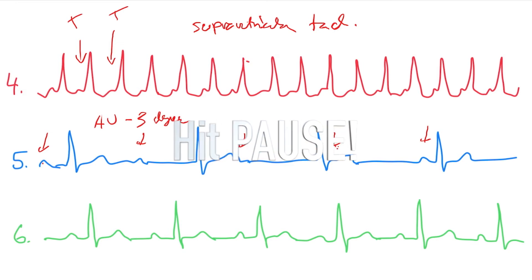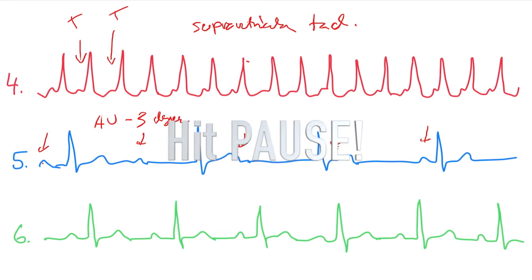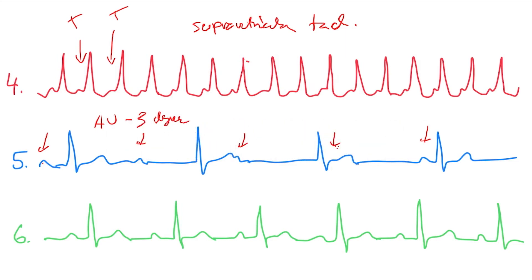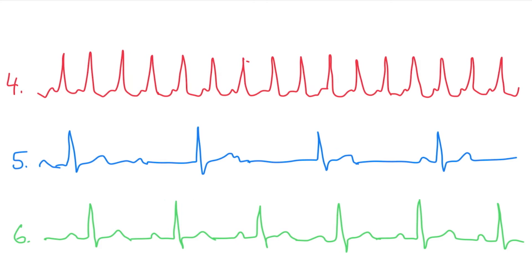Look at this. Six. What is that? This is hard to tell, but I'll tell you — this is elongated everywhere, constantly. PQ is longer. So it's an AV block. Which degree? First. The first degree. Very good.